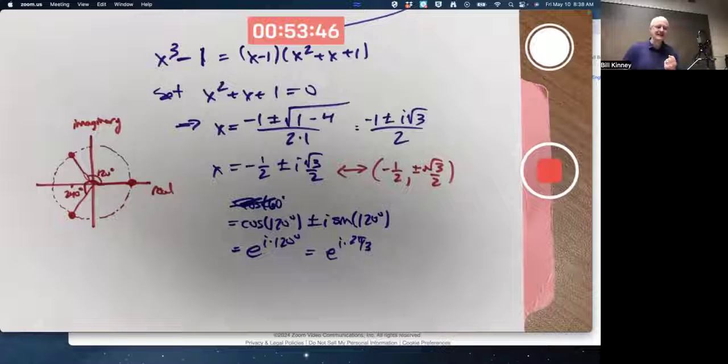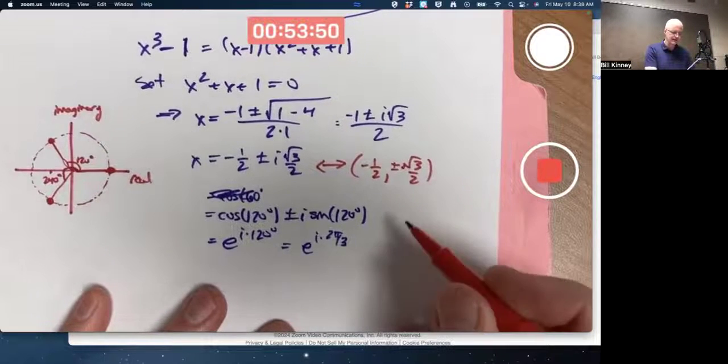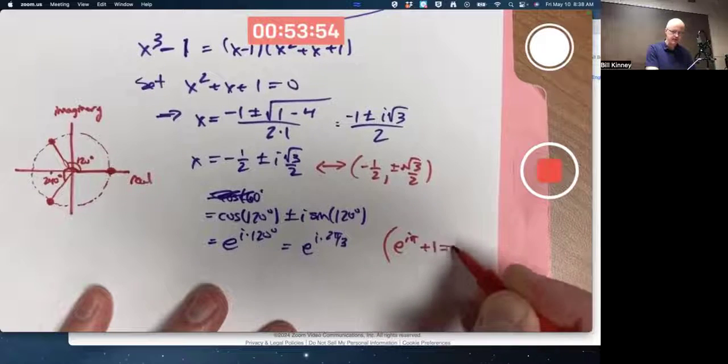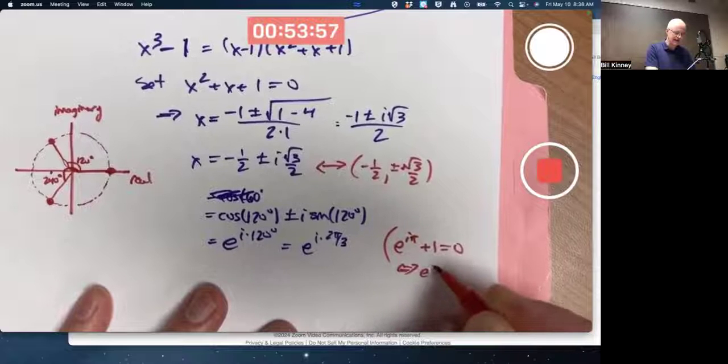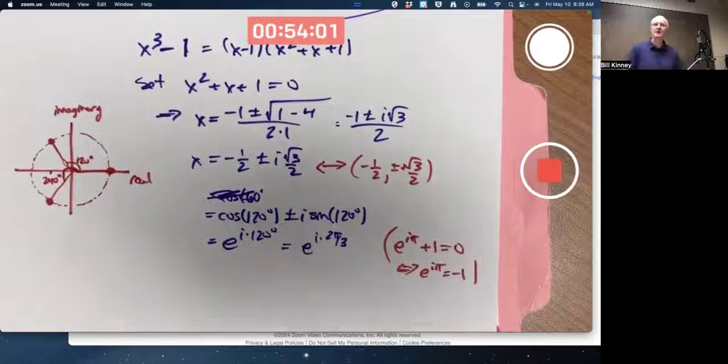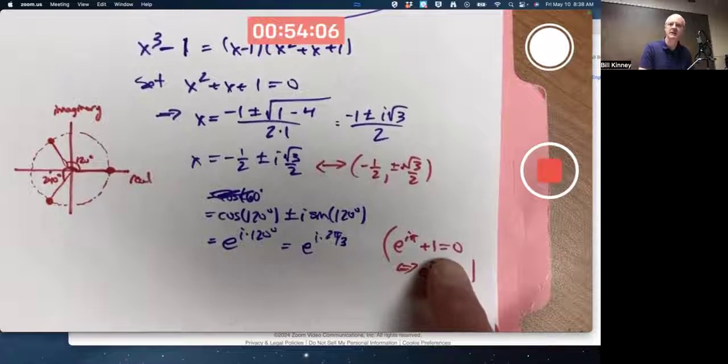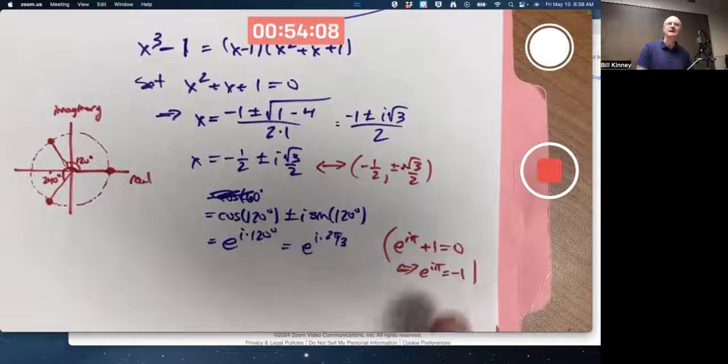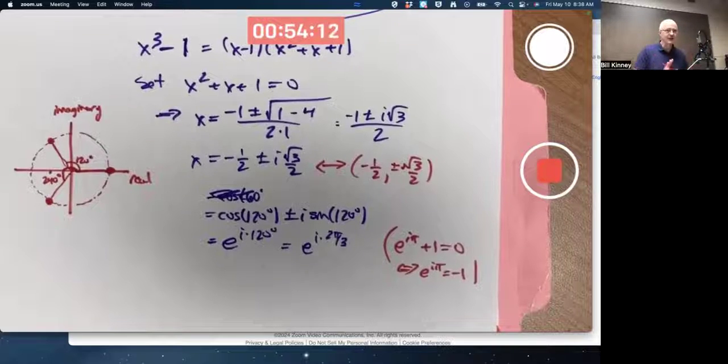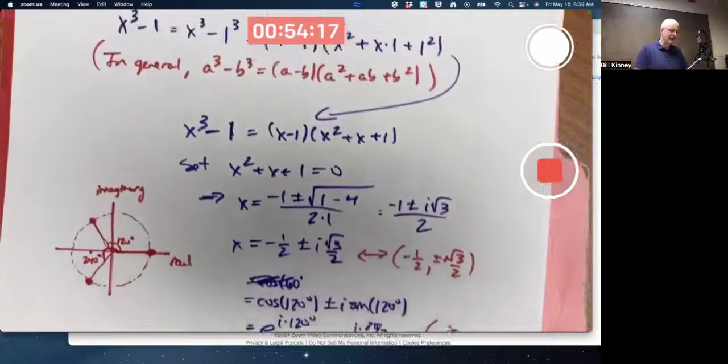It is also related to the most beautiful equation in the universe: e^(iπ) + 1 = 0. In other words, e^(iπ) is -1, which is the most beautiful equation in the universe, with the five most important numbers, the three most important operations, and the most important equivalence relation equals in the universe. It's worth knowing a little bit about.